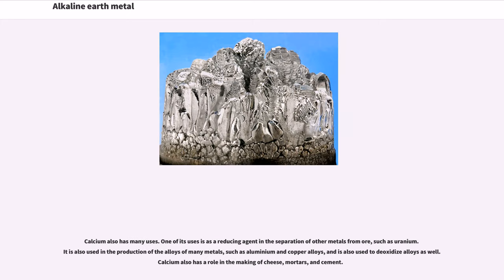Calcium also has many uses. One of its uses is as a reducing agent in the separation of other metals from ore, such as uranium. It is also used in the production of the alloys of many metals, such as aluminium and copper alloys, and is also used to deoxidize alloys as well. Calcium also has a role in the making of cheese, mortars, and cement.